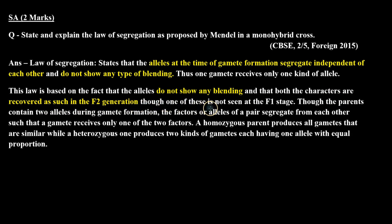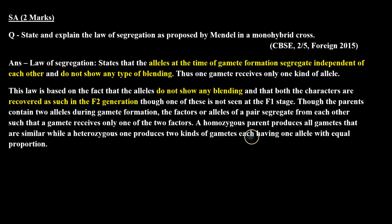Though one of these is not seen at the F1 stage. Though the parents contain two alleles, during gamete formation the factors or alleles of a pair segregate from each other such that a gamete receives only one of the two factors. A homozygous parent produces all gametes that are similar, while a heterozygous one produces two kinds of gametes each having one allele with equal proportion. Now let's see how we understand this from the cross.